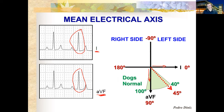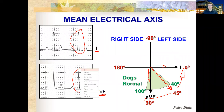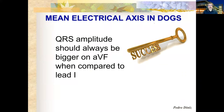If both waves are equal amplitude, the axis is around 45 degrees. If Lead I is bigger than AVF, the axis is shifting to the left — potentially abnormal. If AVF is bigger than Lead I, the axis is in the normal range. The key point: in a dog, the QRS amplitude in AVF should always be bigger than in Lead I to be considered normal.